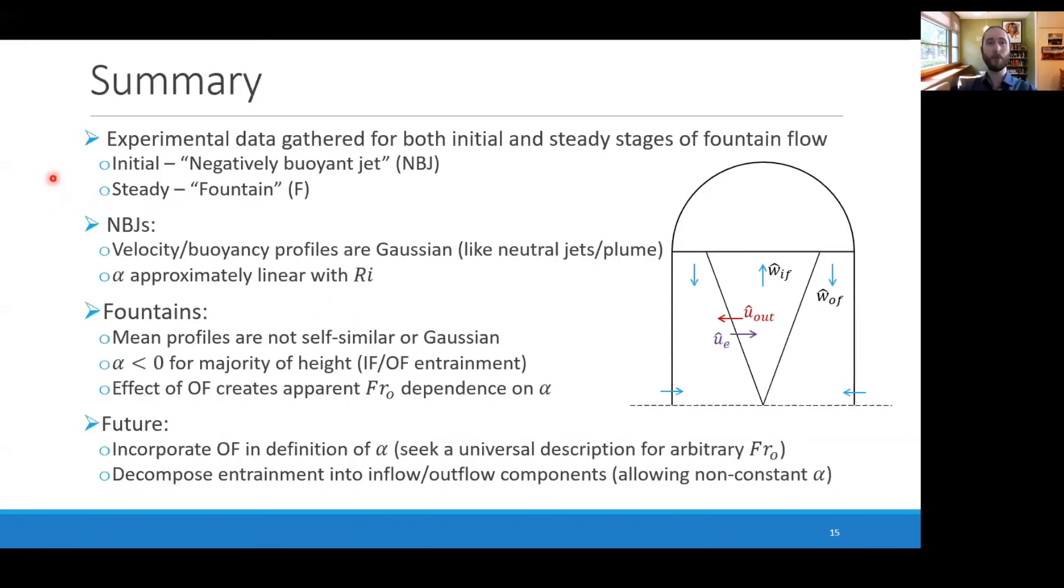In summary, we've done an experimental study into negatively buoyant jets and fountains, both the initial and steady stages of the flow. The negatively buoyant jets, the velocity and buoyancy profiles are Gaussian at a wide range of locations, similar to a neutral jet. The entrainment coefficient is approximately linear with Richardson number, decreasing and eventually becoming negative.